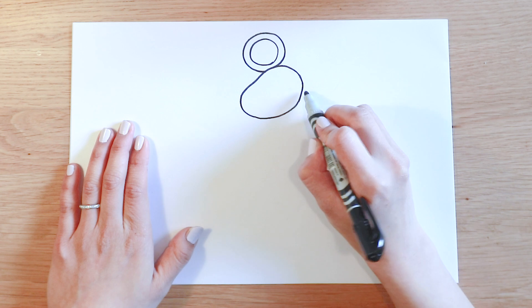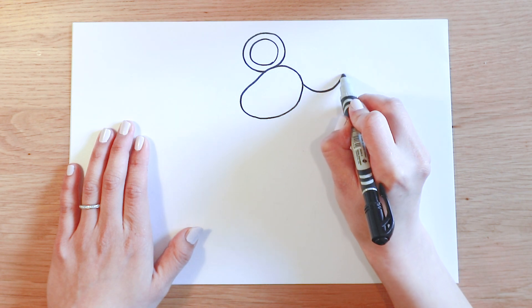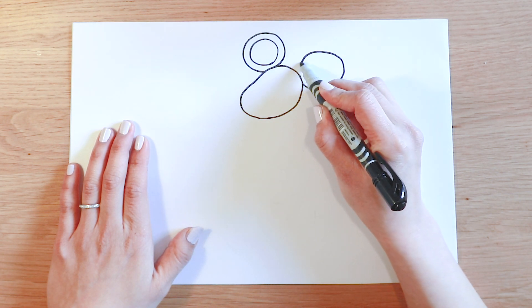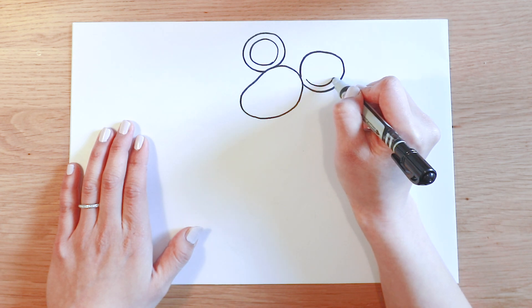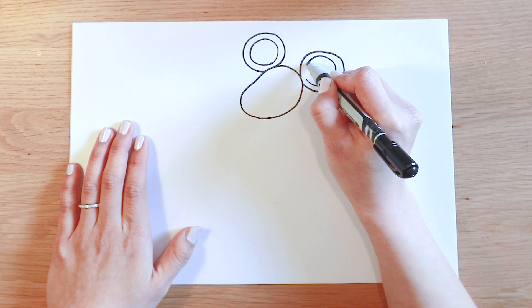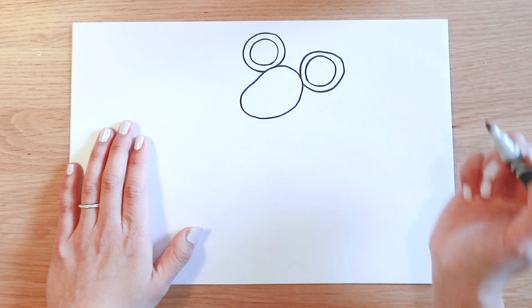Again a big circle and a smaller circle. Now I'm gonna draw Monty's face.